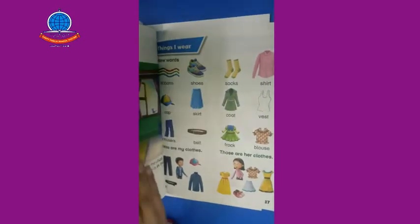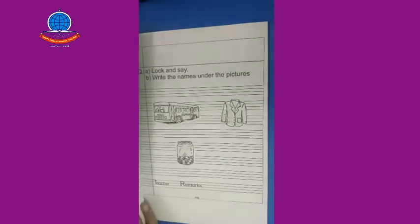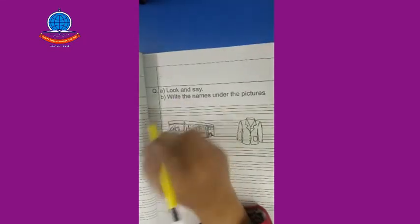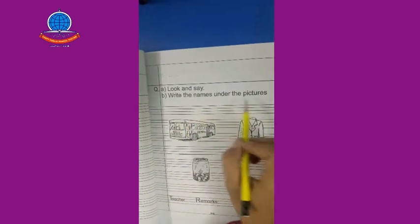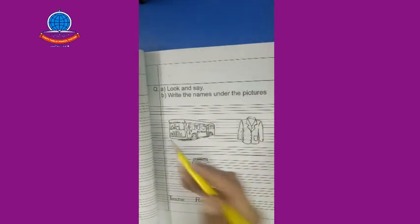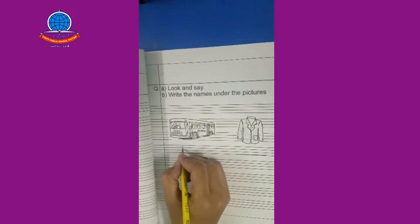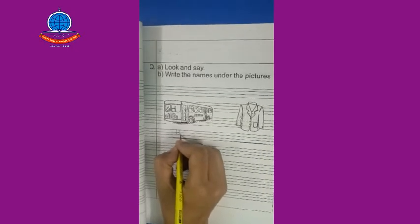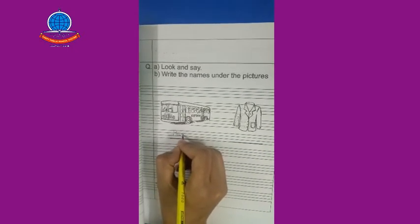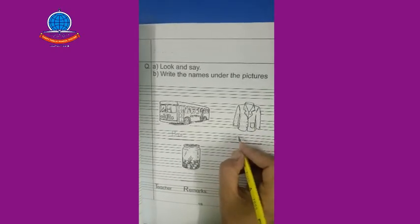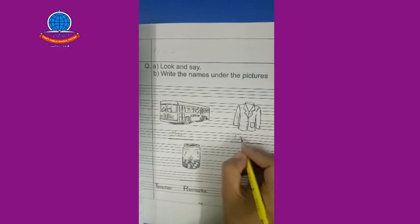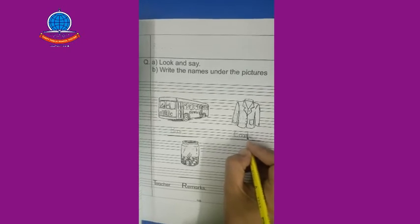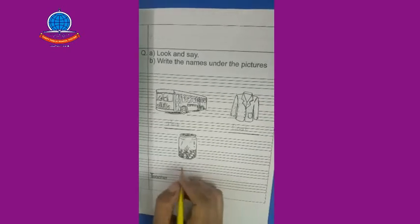Let's move to the copy. On the copy we have page number 48. We have a question: look and say, write the names under the picture. Okay, this is a picture of a bus. And this is a picture of a coat — c, o, a, t. You have to write very neatly.